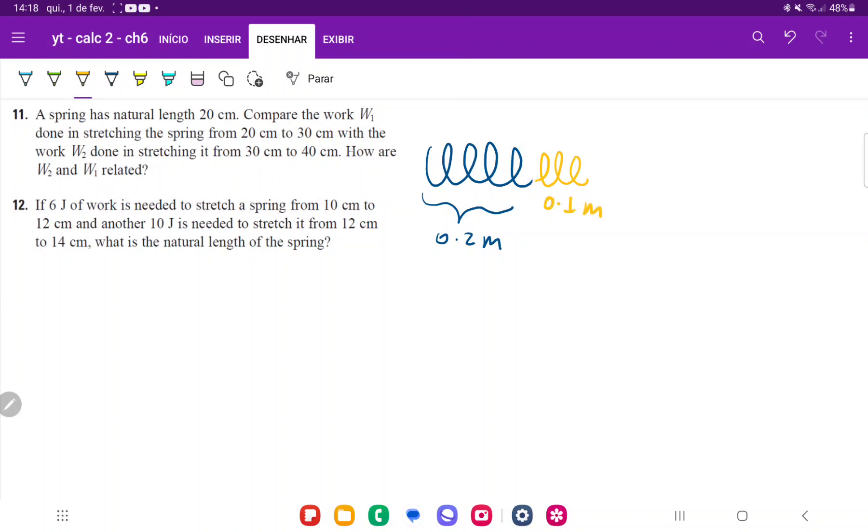Then we compare this work to W2, which stretches it from 30 to 40 centimeters—from the length in yellow to the length in green—which is an additional 10 centimeters, so an additional 0.1 meters.